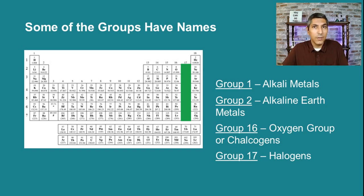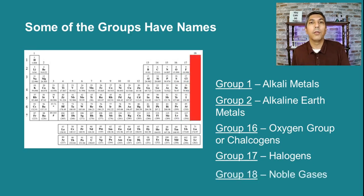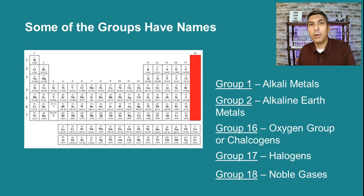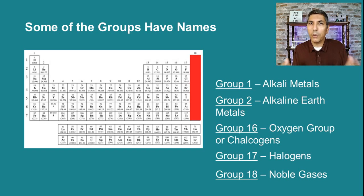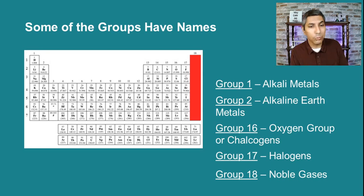Group 17 is called the halogens. Halogens are found in lots of compounds and are often used in cleaning solutions — chlorine is found in bleach, and iodine can be used to kill germs. Group 18 is called the noble gases. We call them noble gases because they don't tend to form many compounds with other elements — it's almost like they're noble in that they don't have a whole lot to do with the other elements on the table.